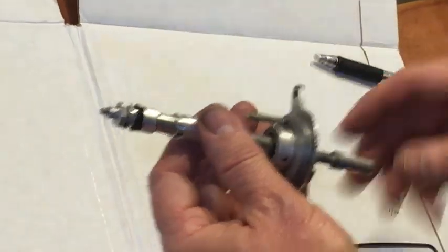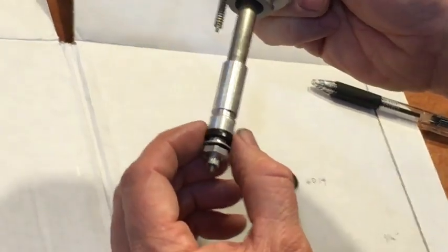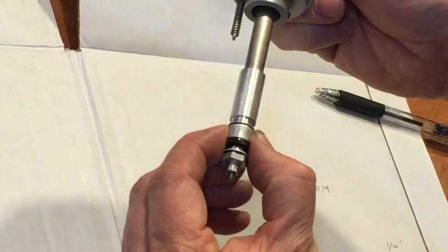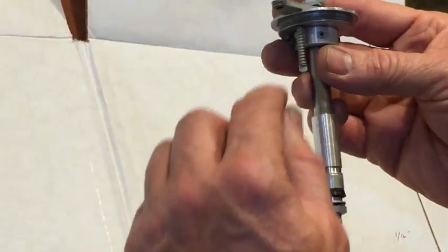My stem has about four threads on it. That's about right. You just need it to be able to basically set snug against the top there and be able to rock back.